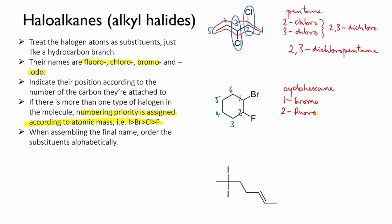Now when we're putting the name together we have to fall back on the rule that we already know that substituents in the name should be ordered alphabetically. So bromo will come before fluoro in the name. So the complete name is 1-bromo-2-fluorocyclohexane.